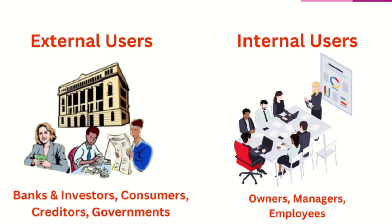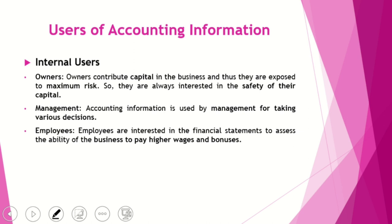There are two categories of users of accounting information. First, external users — those who are outside the organization and are interested in business activities. Second, internal users — those who are within the organization and look after administrative activities. External users include banks, investors, consumers, creditors, and government. Internal users include owners, managers, and employees.